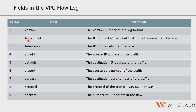If you have multiple accounts — for example, development, test, production — you can push the logs to a central log account. The account ID field helps differentiate from which account a flow log request is coming. Then you have interface ID, which is the ID for the network interface for which the traffic is being recorded. Remember, flow logs always capture traffic for the network interface.